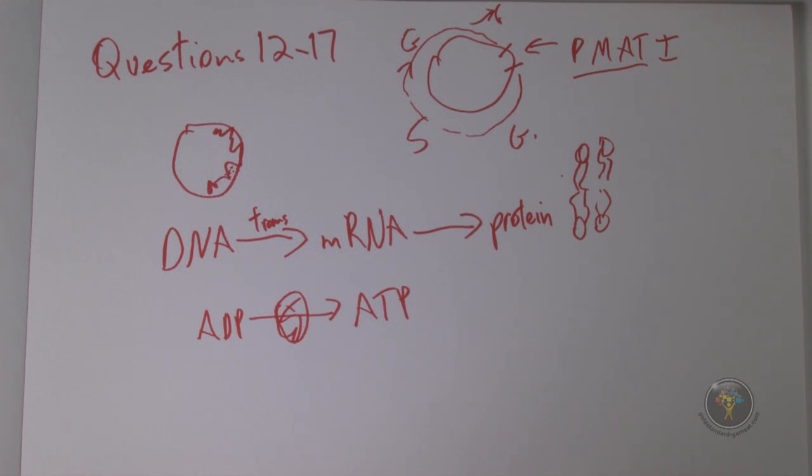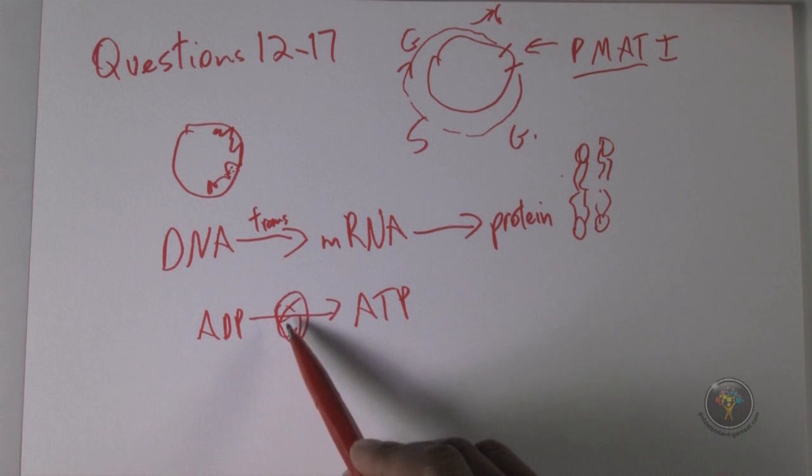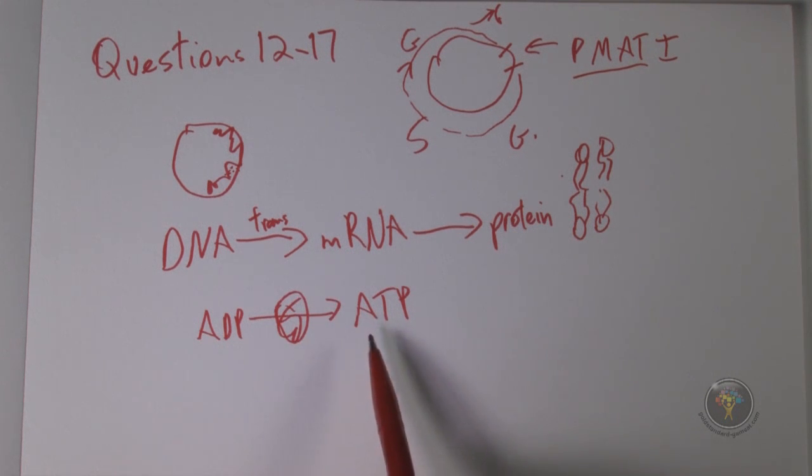But 'stores energy in bonds of ATP' is actually combining two ideas. Yes, the mitochondria is making and producing ATP, shown by the diagram. Hopefully you already know the mitochondria is the powerhouse of the cell. This is where you have oxidative respiration, metabolic respiration. The most efficient creation of ATP in your body takes place in mitochondria.